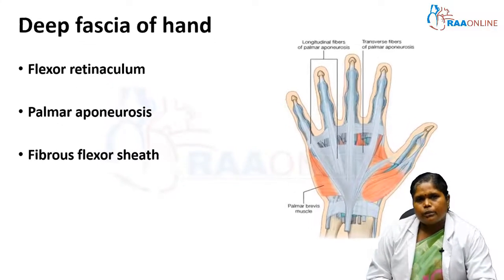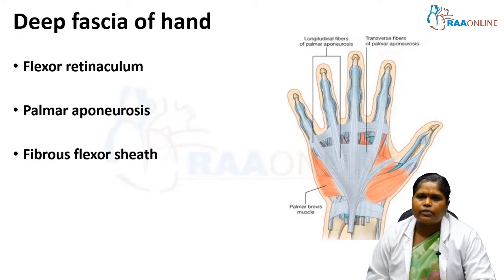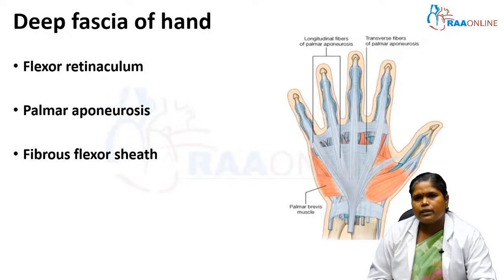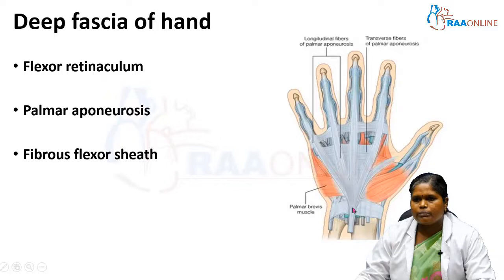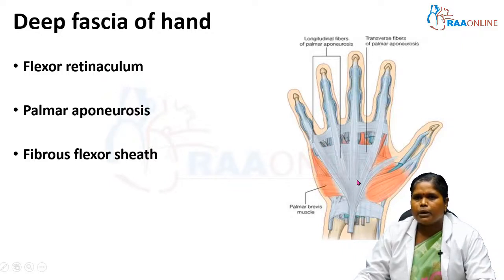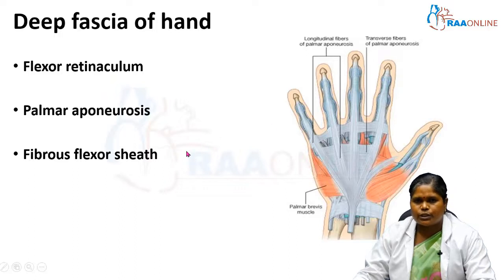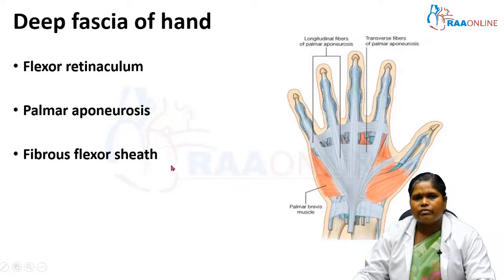Before going to the flexor retinoculum proper, we will look at the deep fascia of the hand. The deep fascia of the hand is thickened at certain places: at the wrist, it is thickened to form the flexor retinoculum; in the center of the palm, it is thickened to form the palmar aponeurosis; and over the digits, it is thickened to form the fibrous flexor sheath.